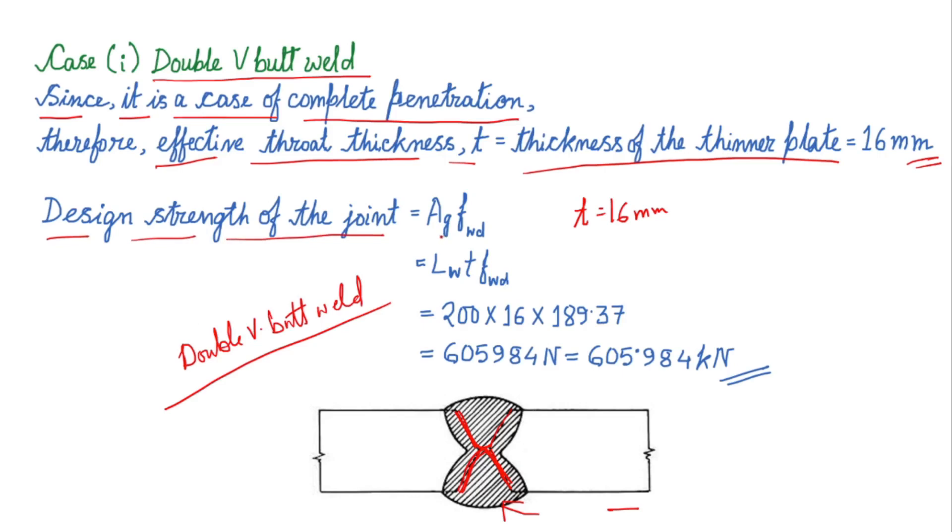That's why the effective throat thickness t is in this case 16mm. Now design strength of the joint, previously we have calculated design strength of the weld and this is design strength of the joint, and finally the value has been calculated as 605984 Newton or 605.984 kilo newton, so this is the design strength of the joint.